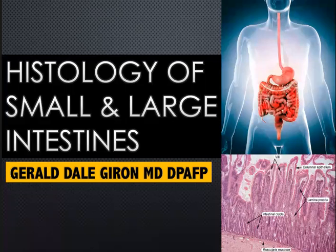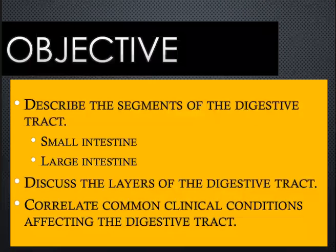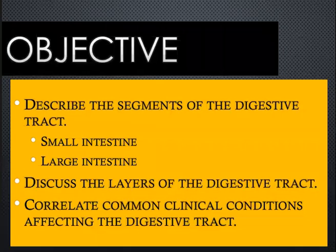Good day again. This is Part 2 of the histology of the digestive tract. For this part, we will be talking about the histology of the small and large intestines. Our objectives are to describe the segments, to describe each layer of the small and large intestine, to identify differences or similarities among segments, and to correlate common clinical conditions affecting the small and large intestines.